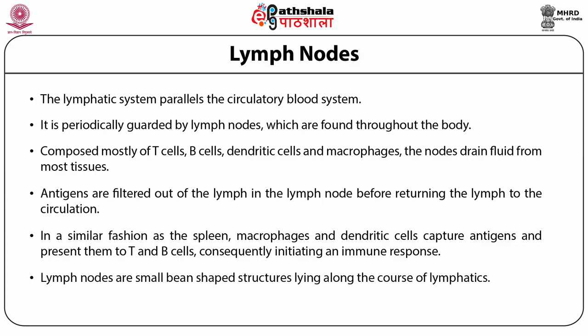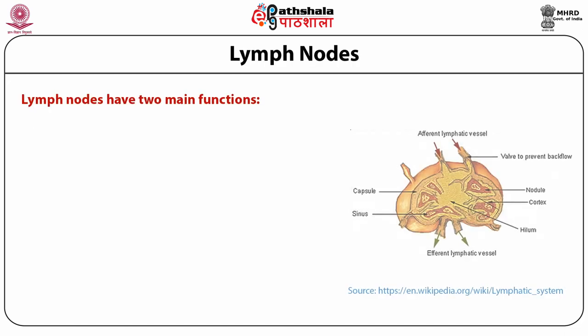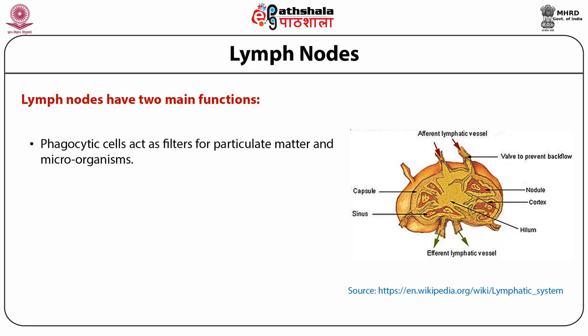Lymph nodes are small, bean-shaped structures lying along the course of lymphatics. They are aggregated in particular regions such as the neck, axillae, groins, and para-aortic region. Lymph nodes have two main functions: phagocytic cells act as a filter for particulate matter and microorganisms, and antigen is presented to the immune system.